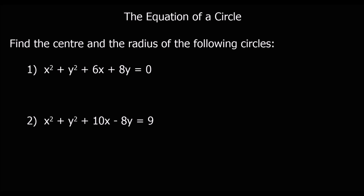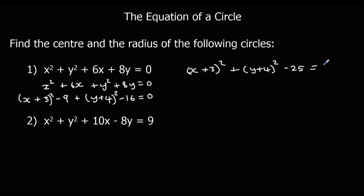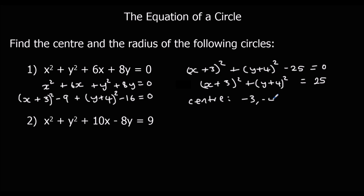For the first question, gather the x terms: x squared plus 6x, and y terms: y squared plus 8y. Complete the square for the x's — halving the x coefficient and taking away that squared — and the same for the y's. This gives x plus 3 squared plus y plus 4 squared minus 25 equals 0. Adding 25 to both sides: the centre is (-3, -4) and the radius is square root 25, which is 5.